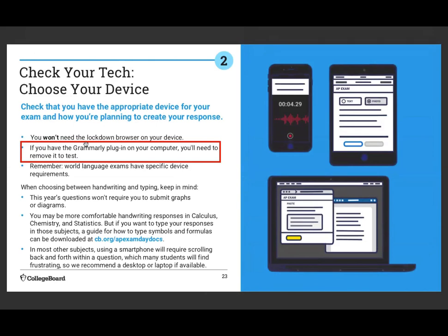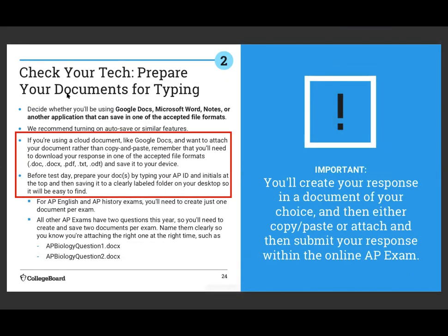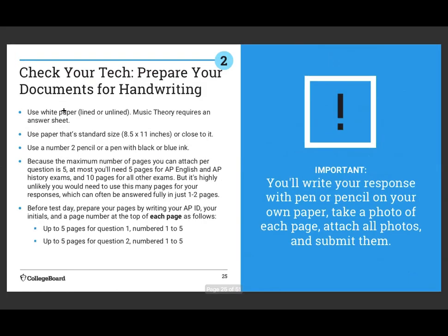If you're taking it on a computer using Google Docs and you have the Grammarly plugin, you have to disable or remove Grammarly before the test. If you're using a phone, you'll most likely be handwriting your response. With a tablet, you can either type or handwrite. With a laptop or desktop, cut and paste is going to be the easiest option. If you're writing by hand, use white lined or unlined paper, 8.5 by 11 standard size, with a number two pencil or blue or black pen. The maximum number of pages per question is five, so you'll need 10 pages maximum. Write your AP ID and initials at the top of each page.